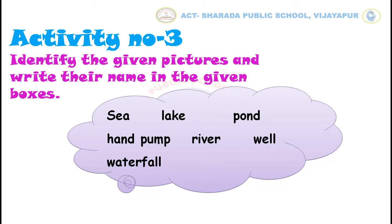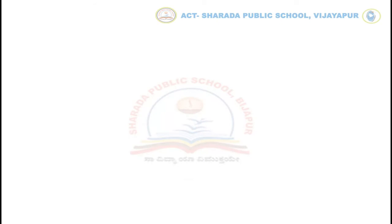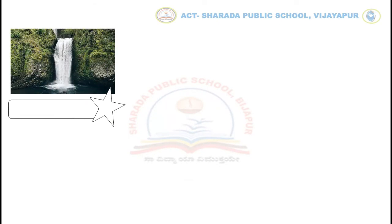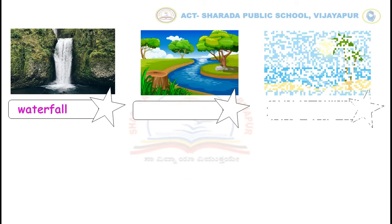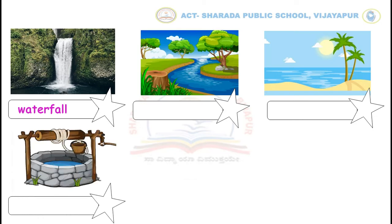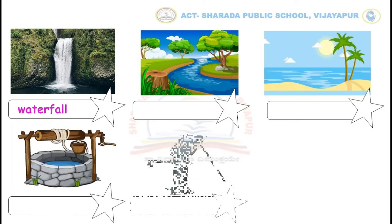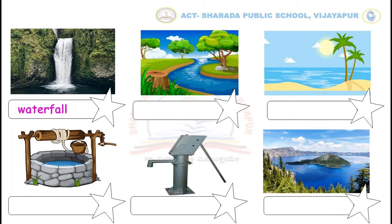One has been done for you. Now look at the first picture. Can you guess, children, what is the name of this picture? Yes, very good. This is waterfall. In the same way, you have to identify the remaining pictures and write their names in the given boxes.